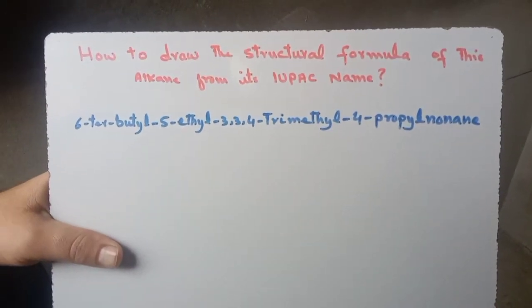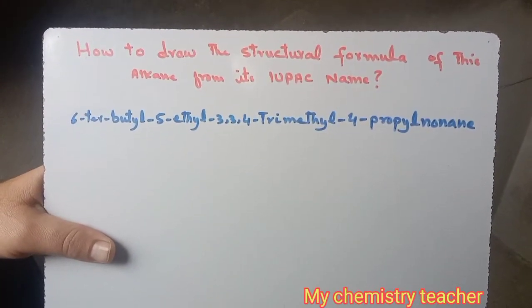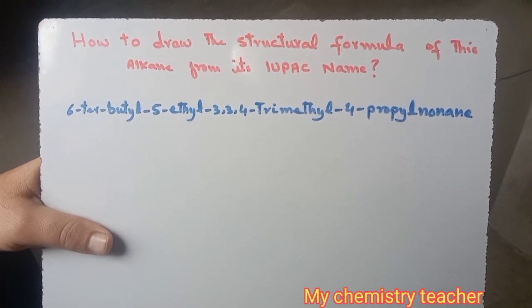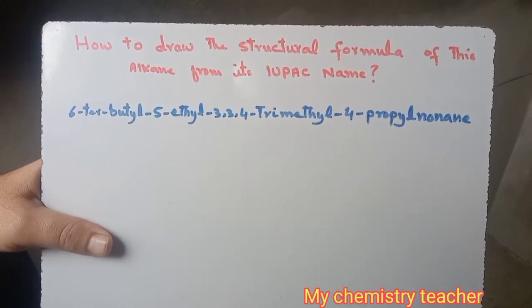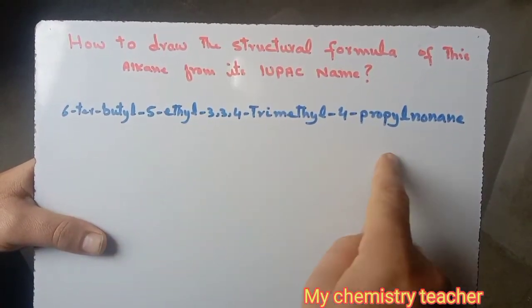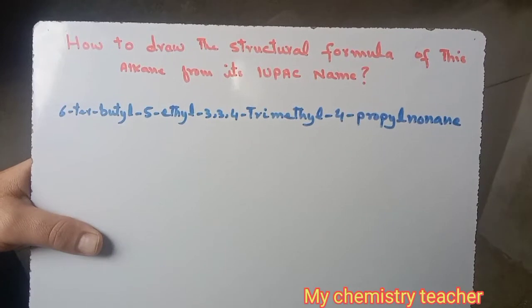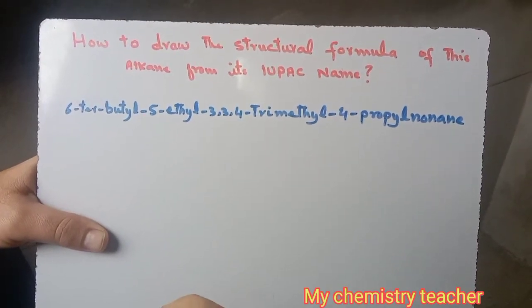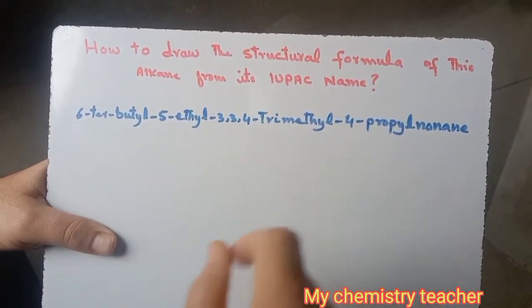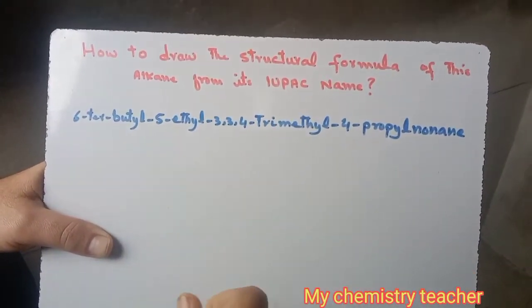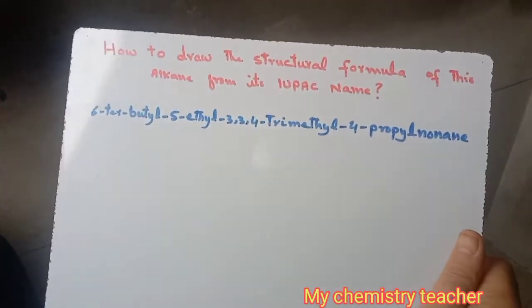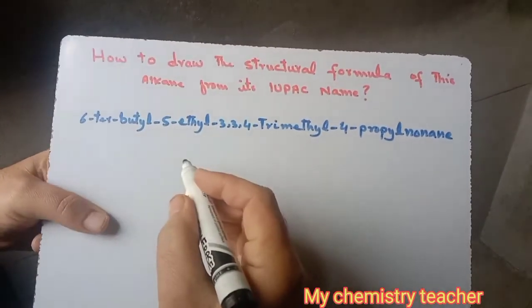Assalamu alaikum dear students. In today's video we are going to draw the structural formula of an alkane from its IUPAC name. If we are given the IUPAC name of any organic compound — here we are taking the particular case of an alkane — then by using certain rules we can easily draw the correct structural formula of that compound.